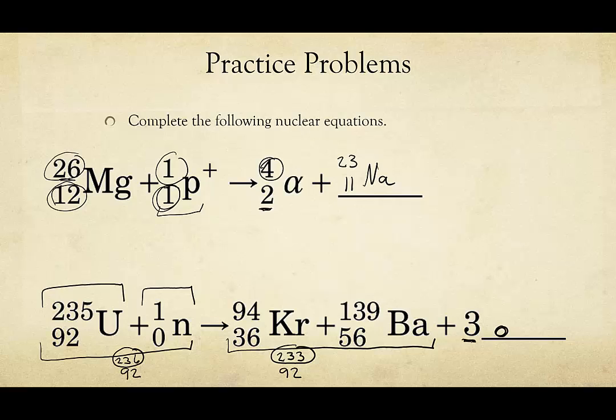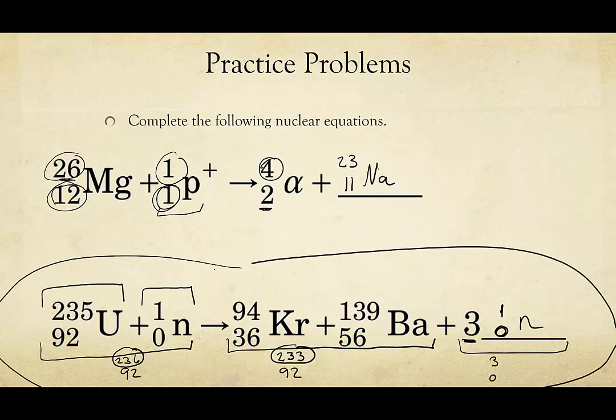However, note that there are three of these, which means that each one must have a mass unit of one, since this will give us a mass unit of three and a proton count of zero. What particle do we have that has a mass unit of one and no charge? Well, that's n, and so we know that it must release three neutrons. Keep this reaction in mind as we move on to the following sections.